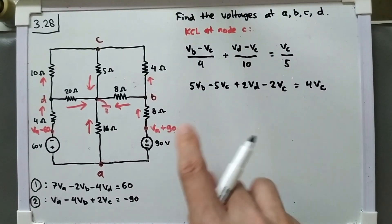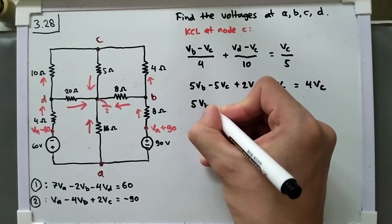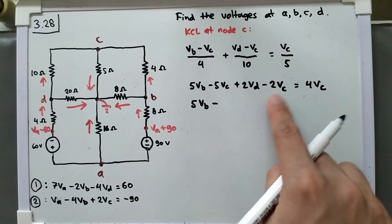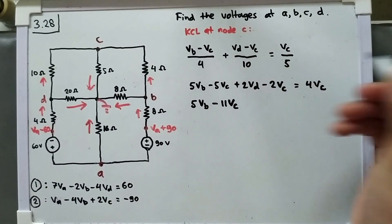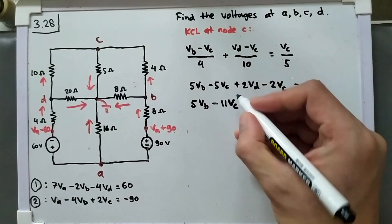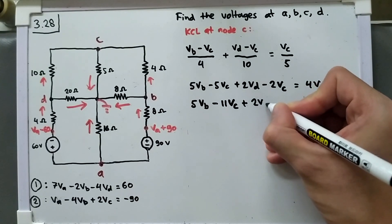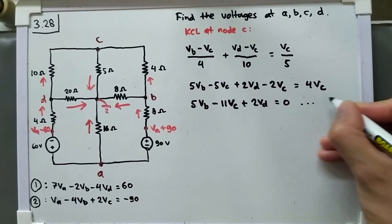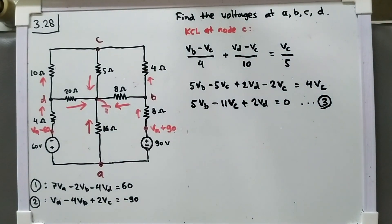Collecting terms: we have one VB here. For VC: minus 5VC minus 2VC is minus 7VC, minus 4VC gives minus 11VC. Equation number 3: 5VB minus 11VC plus 2VD equals 0.